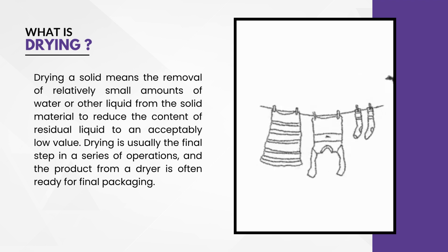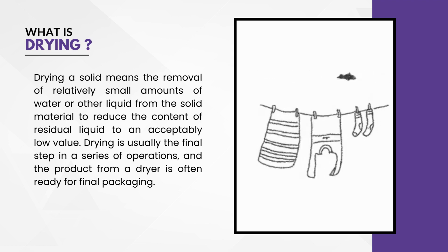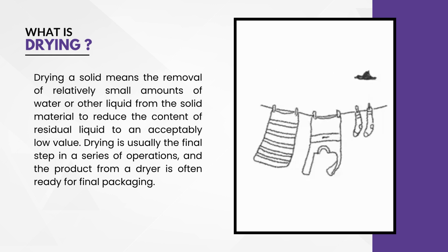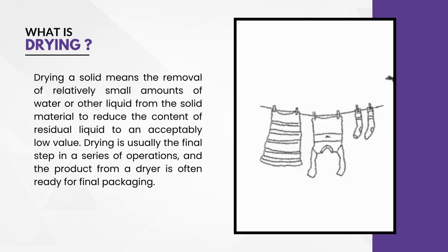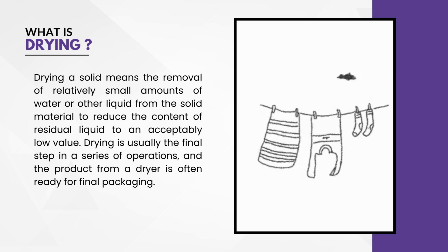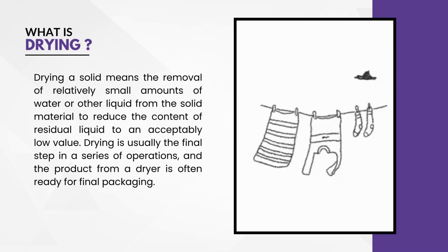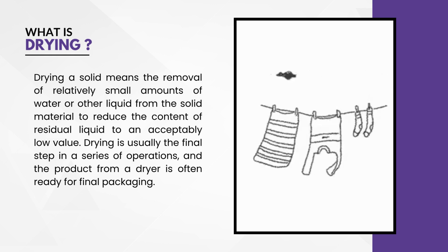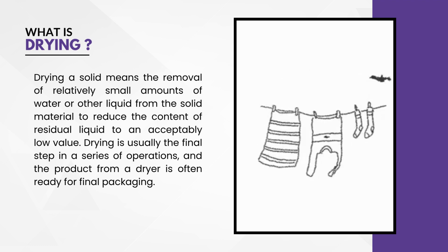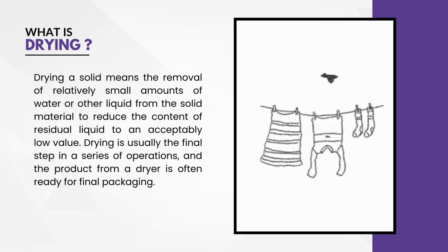The question arises: how is drying considered a mass transfer operation? The reason is simple. Take the example of wet clothes that we dry on a clothesline. The wetness is due to the presence of water. When water evaporates, the mass of water gets transferred to the surroundings and the drying operation is accomplished. In chemical industries, drying is the final step in a series of unit operations in a particular process. After this step, the product is ready for packing.